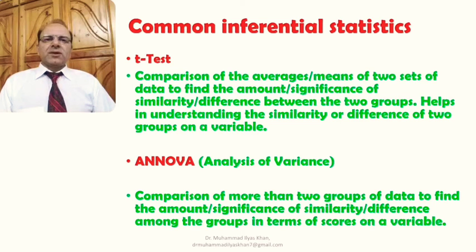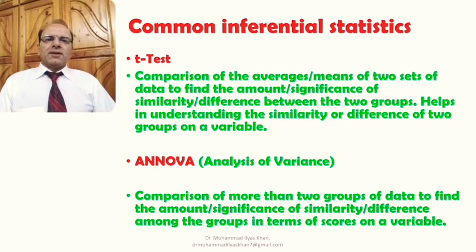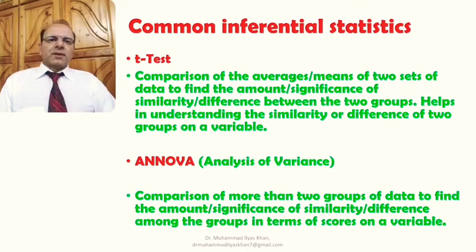ANOVA, or Analysis of Variance, is another very useful inferential statistic. This method is used for the comparison of more than two groups of data to find the amount or significance of similarity or difference among the groups in terms of scores on a variable. ANOVA is a more sophisticated and complex test that helps us make comparisons between more than two groups.